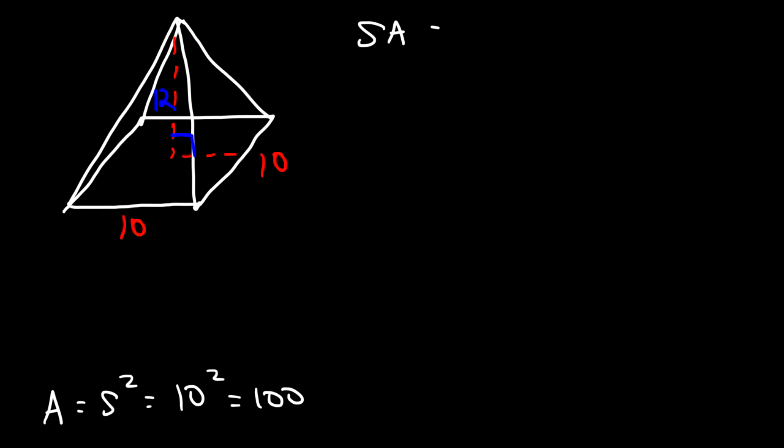Now the total surface area is the area of the base plus the lateral area. So we have the area of the base, that's 100. Now we need to calculate the lateral area.